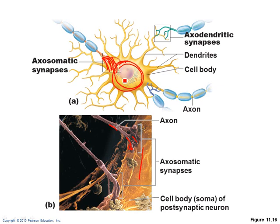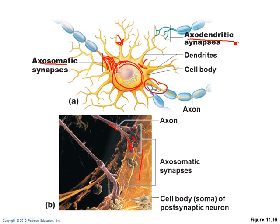Sometimes an axon terminal will synapse on a dendrite, and sometimes an axon terminal will synapse on the cell body. If an axon synapses on the actual cell body, it's called axosomatic. If an axon synapses on a dendrite, they're axodendritic. So if I use the terms axosomatic or axodendritic, I'm just explaining to you where on the cell body or the dendrite the axons are synapsing.